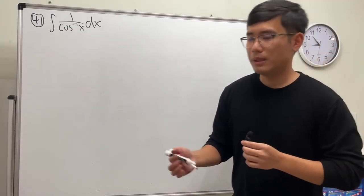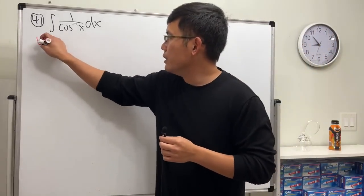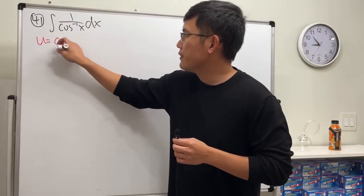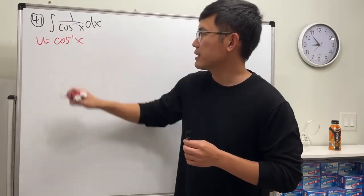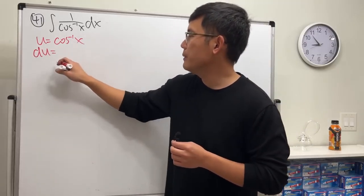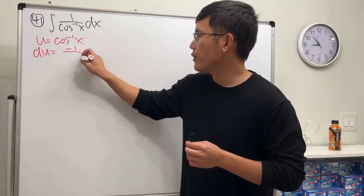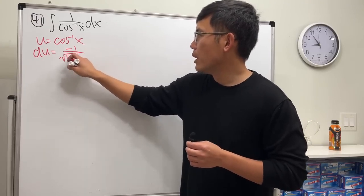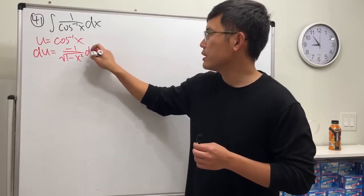Let's do u-substitution first and see what happens. I'll take u equal to inverse cosine of x. Differentiate both sides. du will be negative 1 over square root of 1 minus x squared dx.